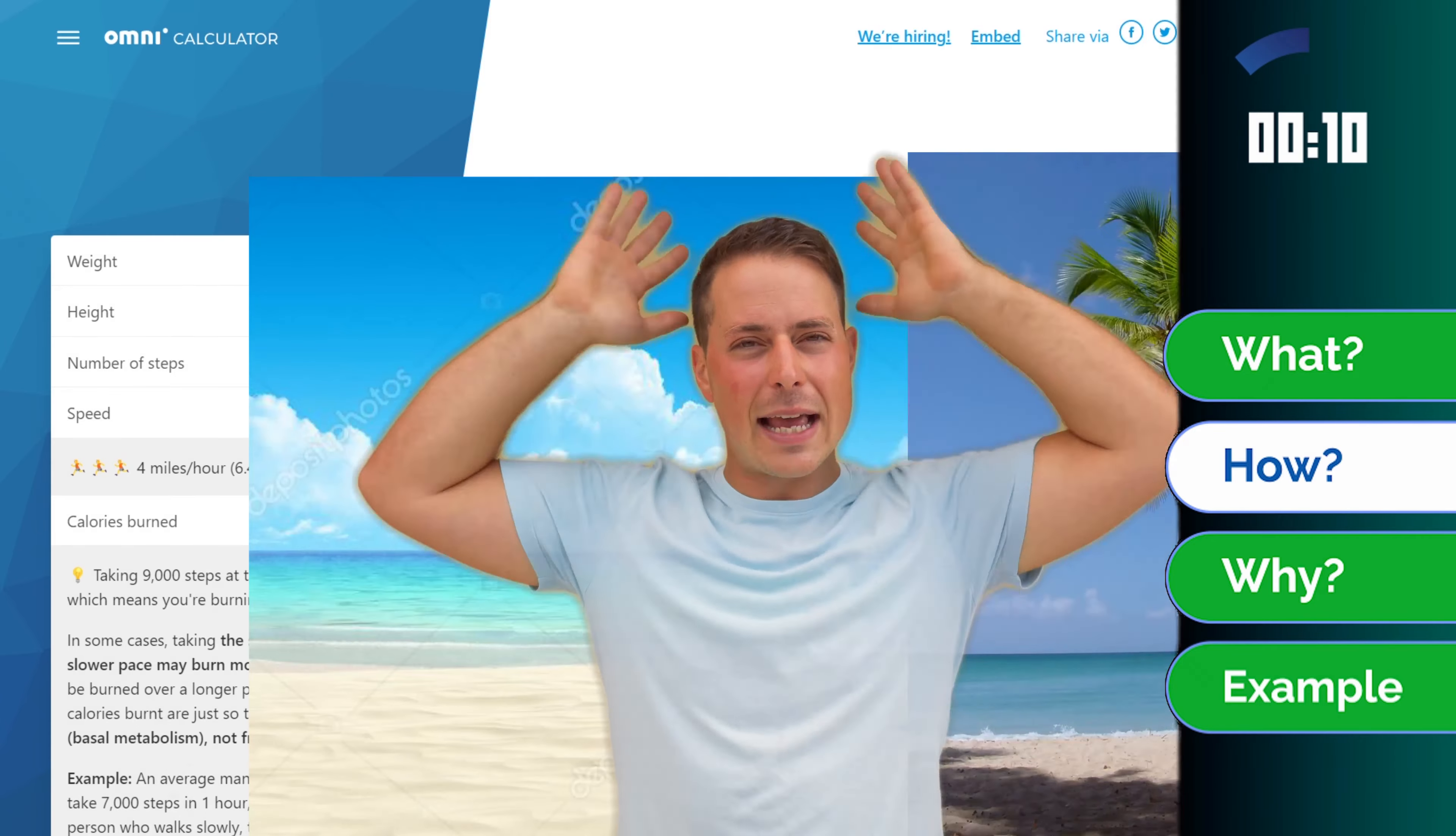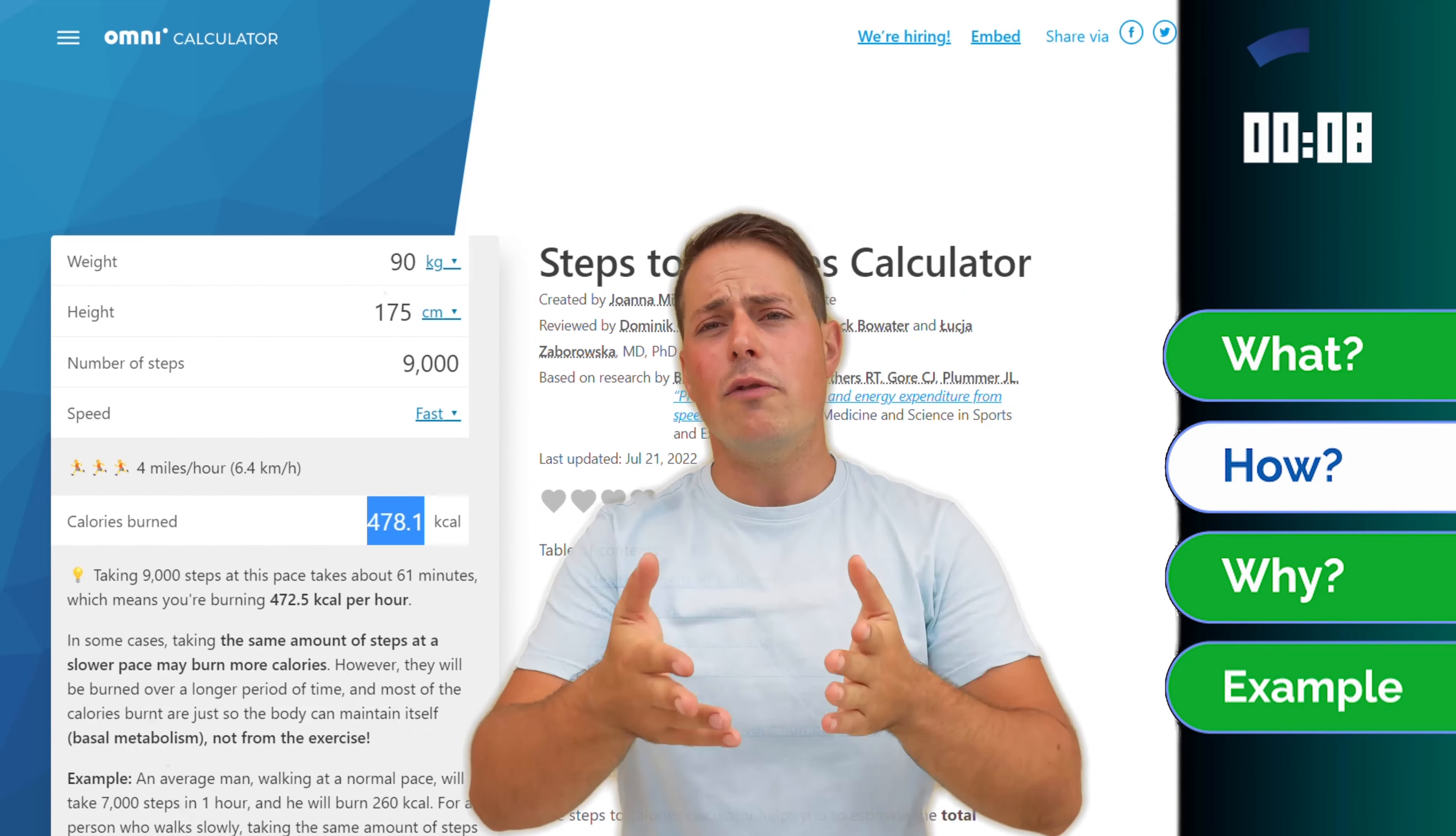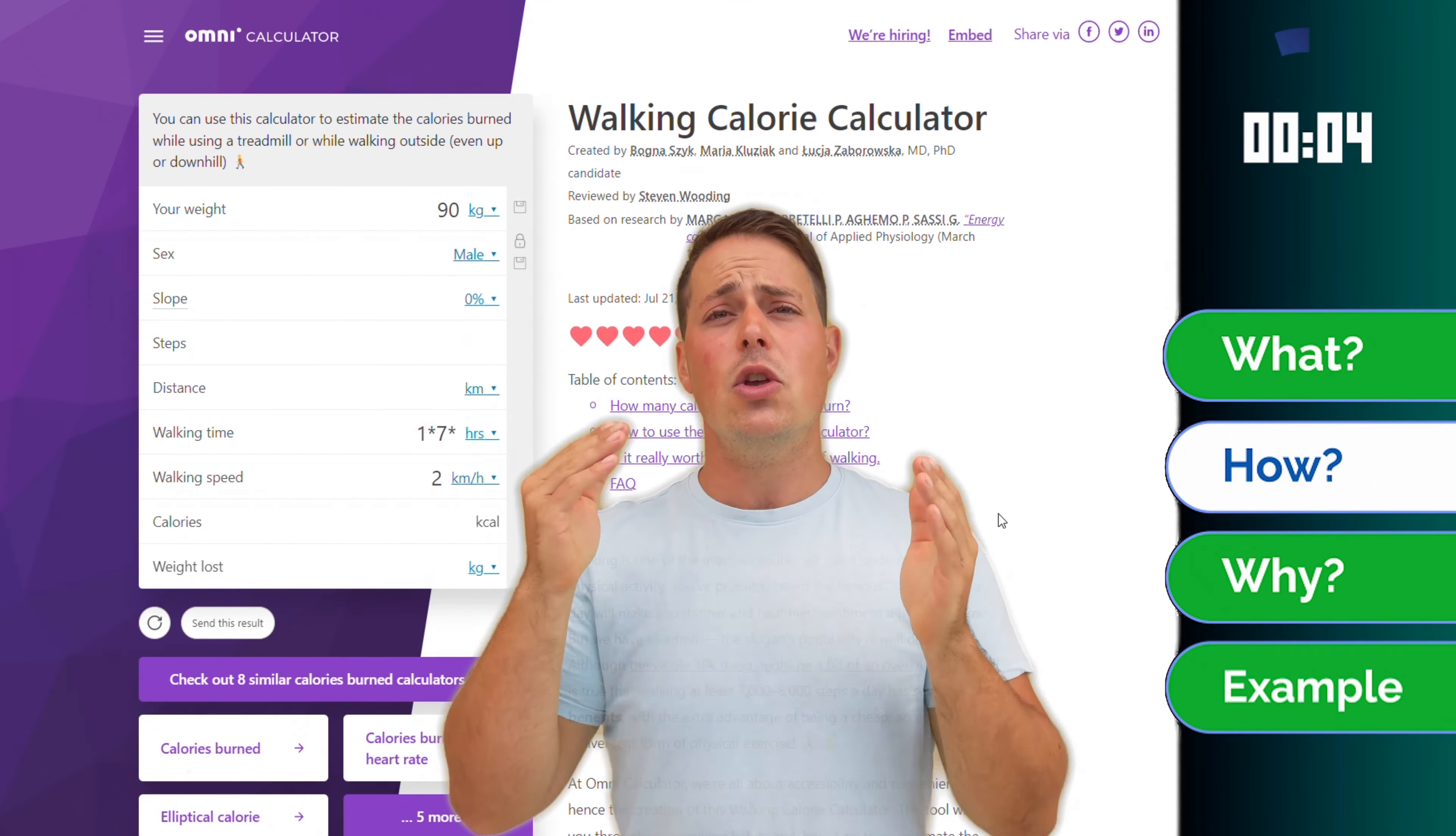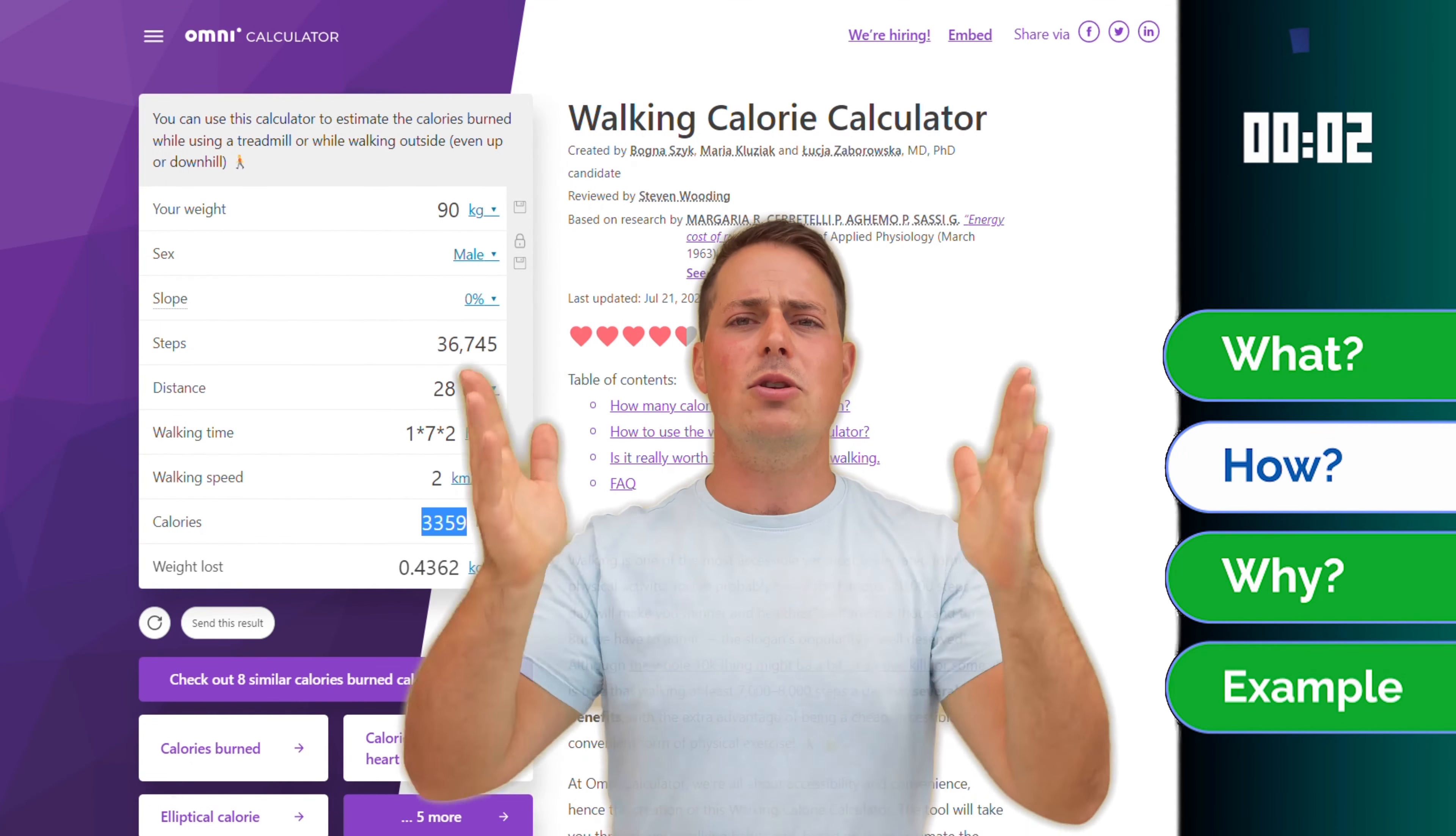In the summer, for example, instead of sunbathing on the beach, you can go for a walk next to the sea. If you do that every day, in just two weeks, you would have burned more than 2,000 calories.